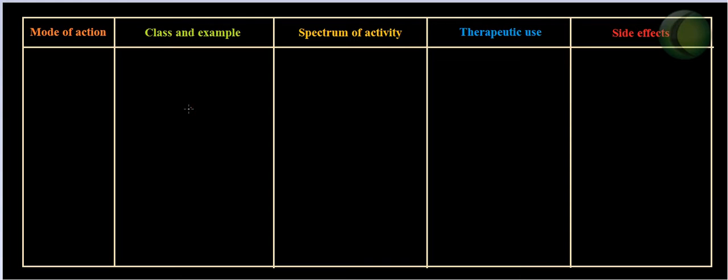Welcome back. In this series of video tutorials, we'll be talking about the different properties of antimicrobial drugs — specifically antibiotics, which have different modes of action. In this video we'll be talking about one type of antibiotic. There are five important properties we'll cover: mode of action, class name and examples, spectrum of activity, therapeutic use, and side effects.